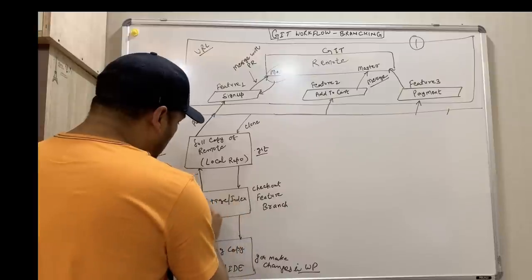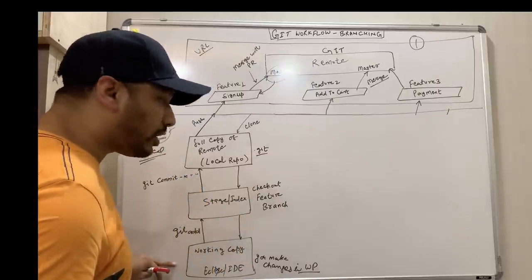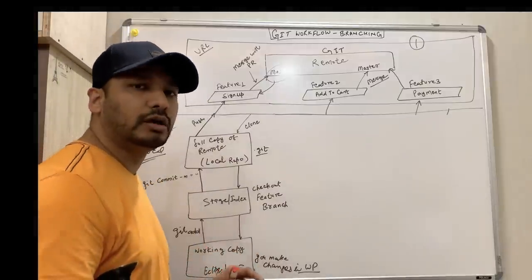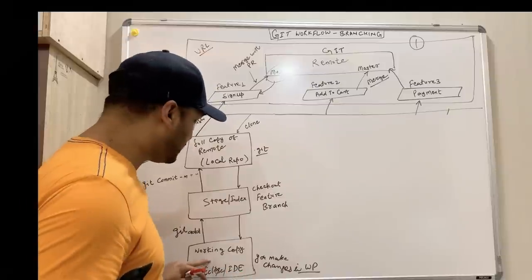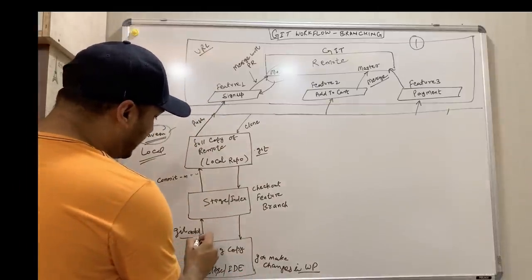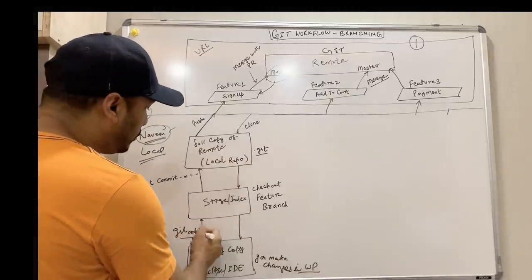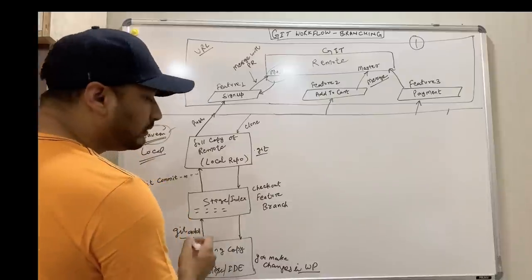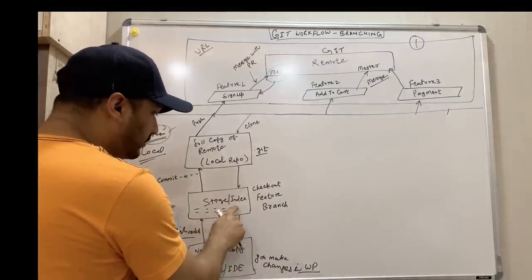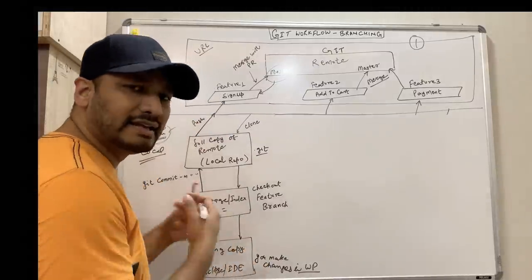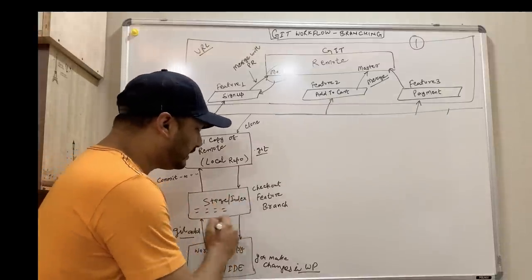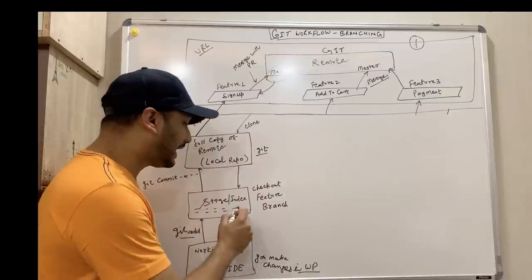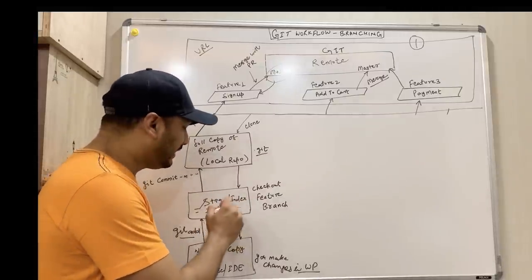When you clone, a .git directory is created containing all the local repositories. Between the local site and the working copy, we have stage and index. Then you check out a particular branch and start working on it — say the signup feature. Some code is already written, you make changes. When you make changes, you use git add with a dot or a specific file to add to your stage. Stage is a kind of bucket maintaining indexing of all the files.